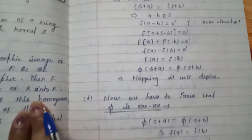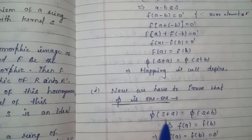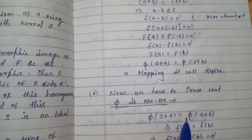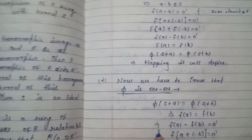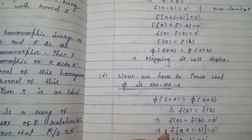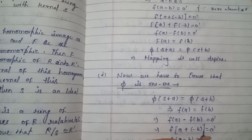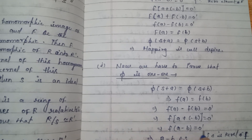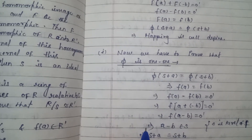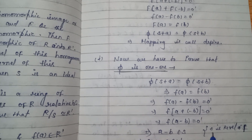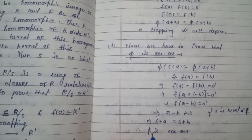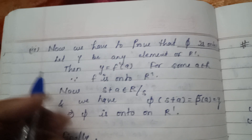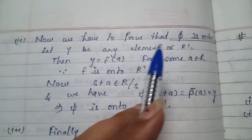Now we have to prove that phi is one-to-one. phi(S+A) = phi(S+B) implies F(A) = F(B), which implies F(A) - F(B) = 0', so F(A + (-B)) = 0', meaning F(A-B) = 0'. This implies A - B belongs to S, where S is the kernel of F. Therefore S+A = S+B, so phi is one-to-one.